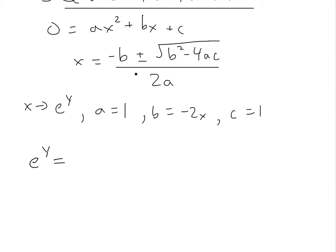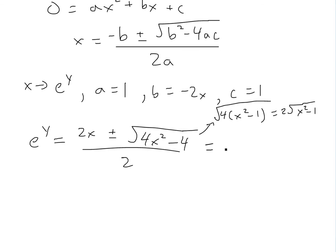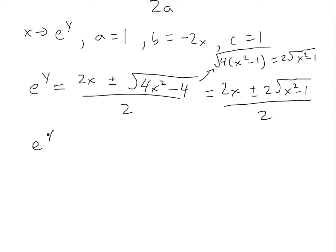Applying the formula, e^y equals negative of (negative 2x), which is positive 2x, plus or minus square root of (negative 2x)² minus 4·1·1, all divided by 2. That gives us 2x plus or minus square root of (4x² minus 4), all over 2. Factoring out the 4 inside the root gives 2 times square root of (x² minus 1), so after dividing through by 2, we get e^y equals x plus or minus square root of (x² minus 1).